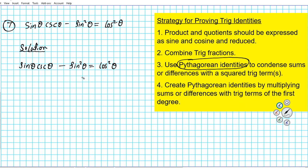So which Pythagorean identity can we apply on the left side of this equation? The hint resides in the fact that we have sine squared theta. The Pythagorean identity that has sine squared theta in it is: sine squared theta plus cosine squared theta equals one.